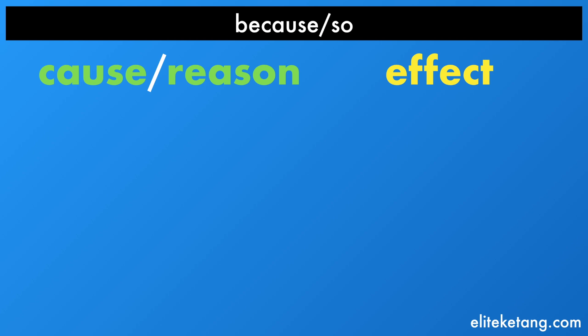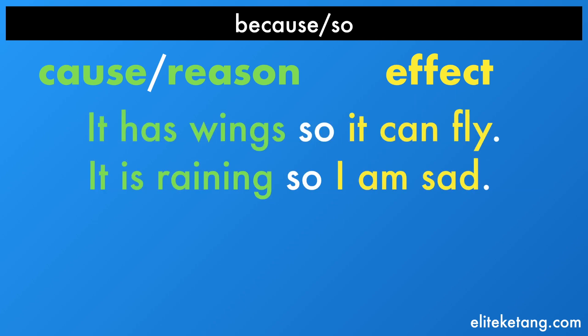Again, the cause is going to come before the word so. So in these sentences, it is raining, so I am sad. It has wings, so it can fly.